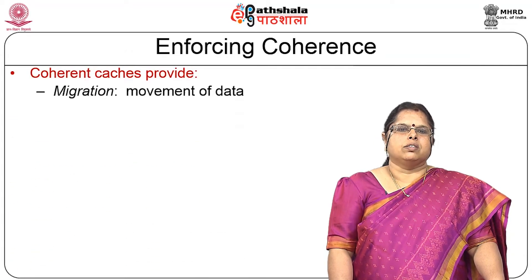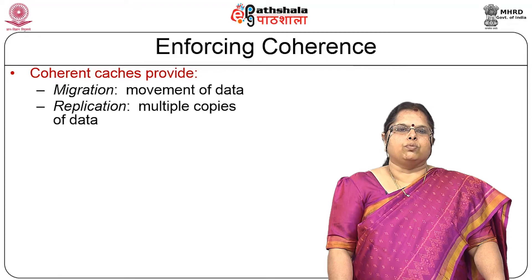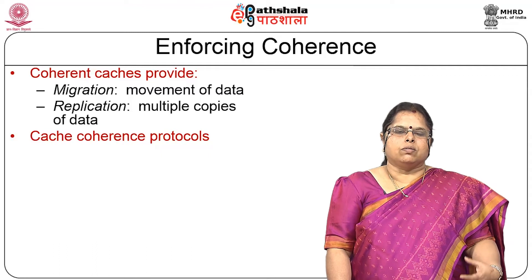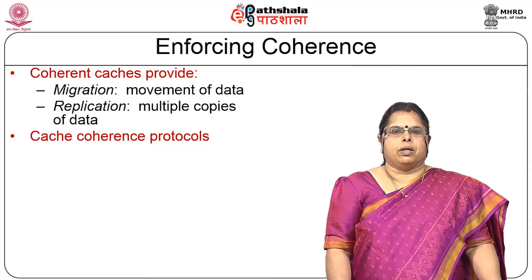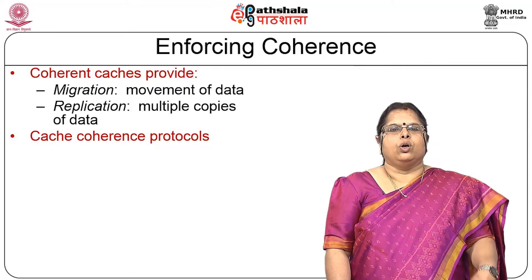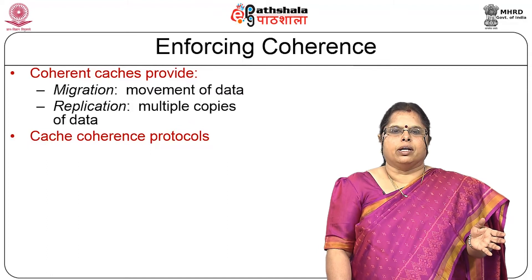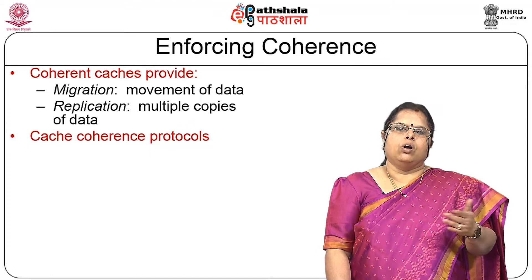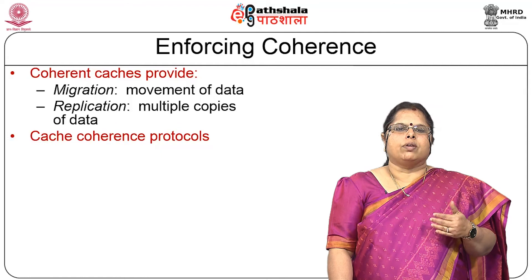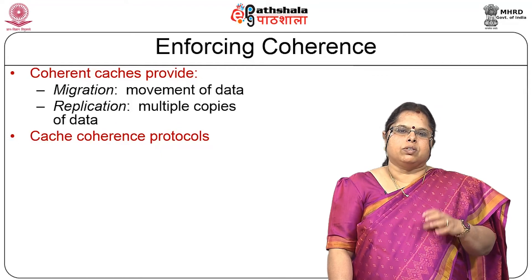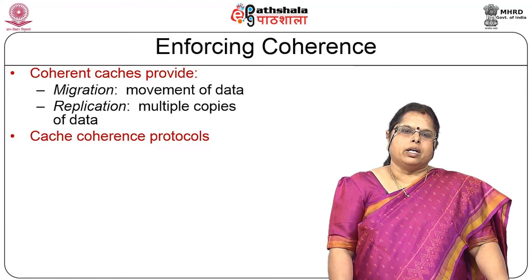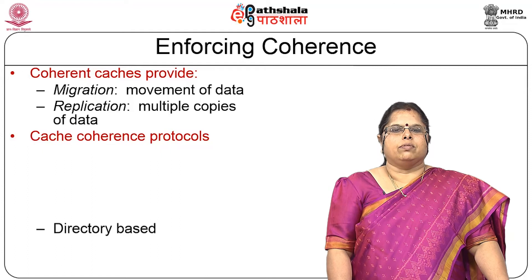The basic problem of coherence arises because caches provide migration and replication. Migration means movement of data from main memory to one cache and from main memory to another cache. Replication means multiple copies of the same data can be available in different caches. Because caches support migration and replication of data, you will definitely have the cache coherence problem and will have to look at ways of handling it.